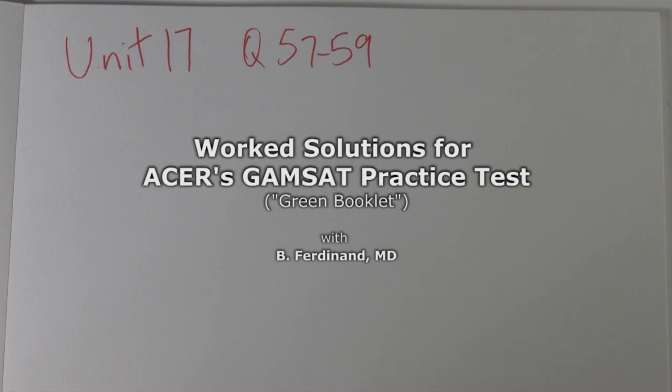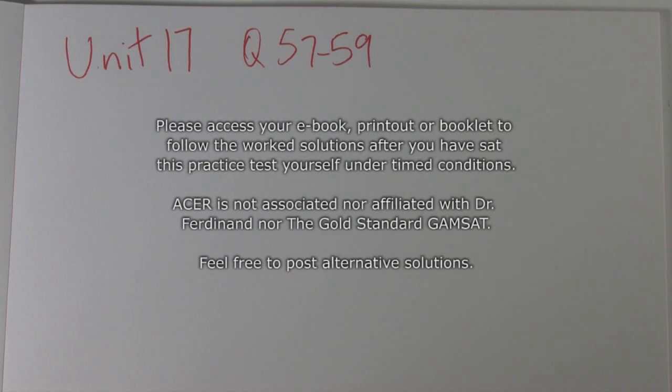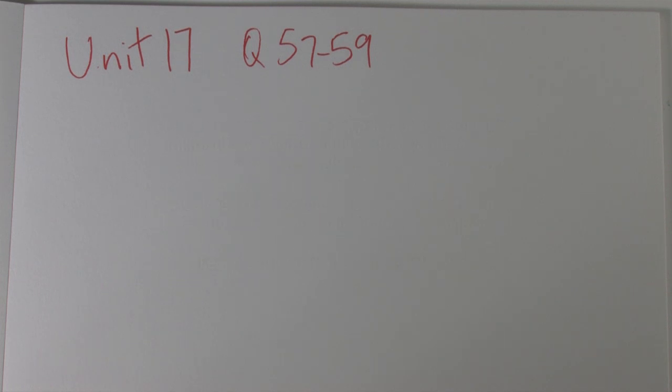Here we go, Unit 17, questions 57 to 59. General reaction of an alcohol with an aldehyde forms a hemiacetal. Now question 57: which of the following structures represents the hemiacetal that exists at equilibrium in a solution of propanol?